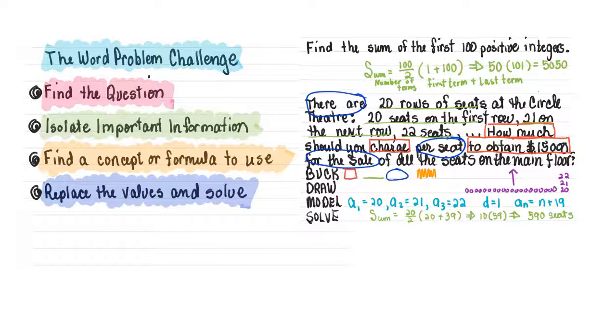Where you would use this is a type of word problem. Auditorium seats seem to be prime examples. There are 20 rows of seats at the Circle Theater, 20 seats on the first row, 21 on the next row, and so forth. How much should you charge per seat to obtain $15,000 for the sale of all tickets on the main floor?